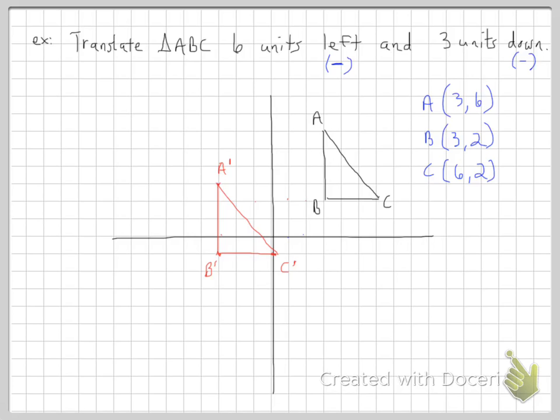And then our new coordinates for our new triangle are going to be for A prime is negative 3, 3. B prime is negative 3, negative 1. And then C prime is 0, negative 1.